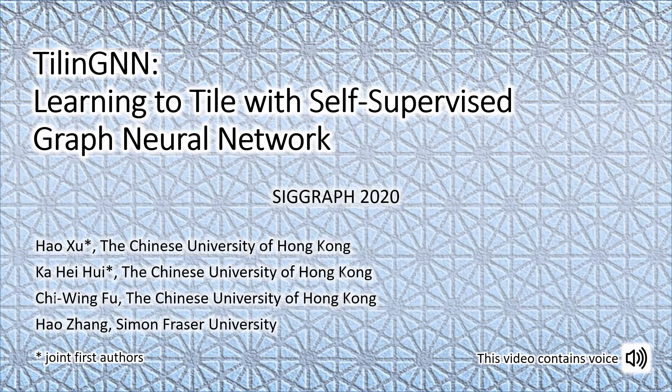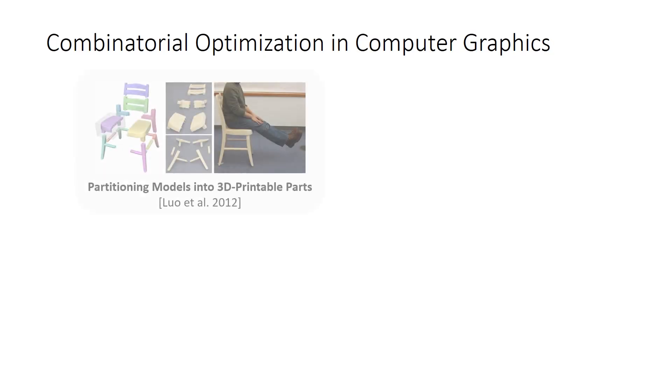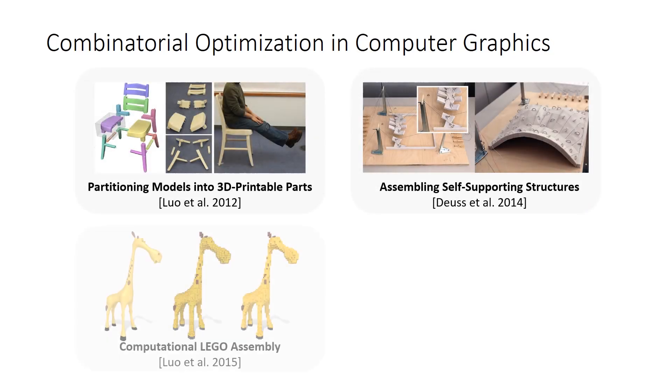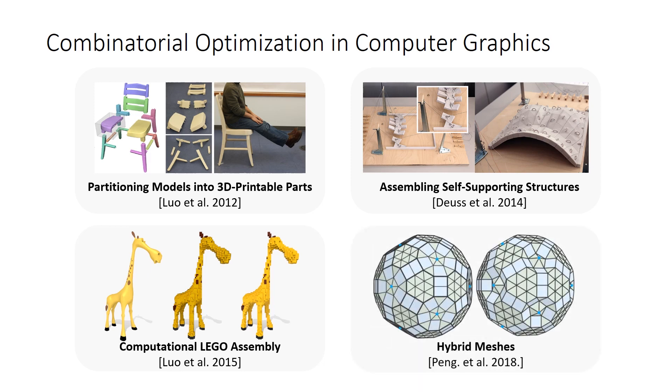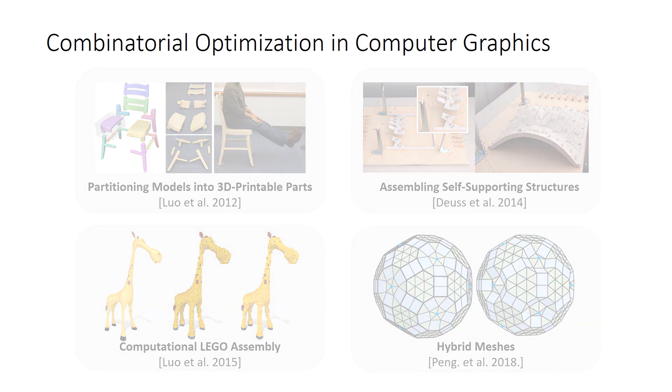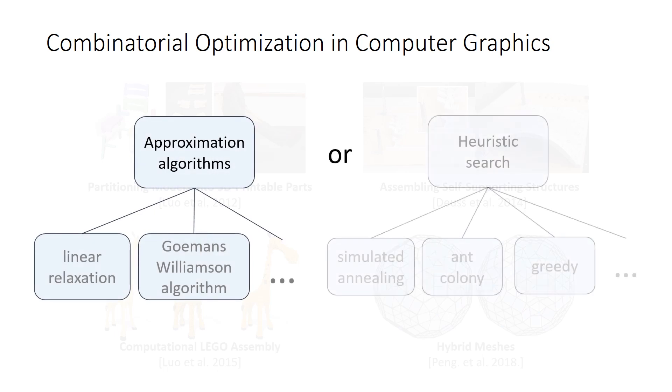Tiling GNN: learning to tile with self-supervised graph neural network. Many problems in computer graphics face combinatorial optimizations, which are typically solved by approximation algorithms or heuristic search methods.